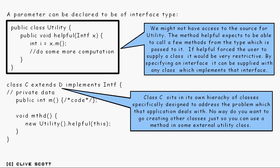Well, this is an example of how interfaces can arise in practice. Supposing you've got this utility class here, and it's got a method called helpful in this case, which all it does is expect to be able to call a few methods in the type which is being passed in, as you can see here. If helpful forced the user to supply a class instead of an interface, then it would be very, very restrictive.